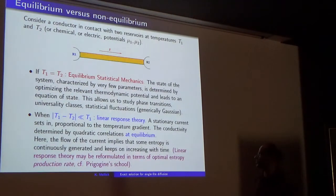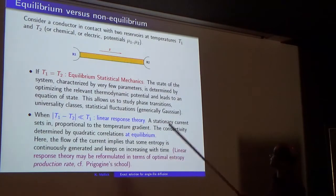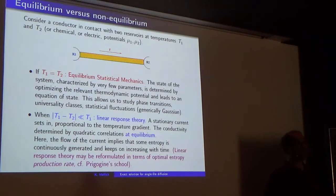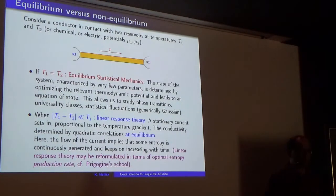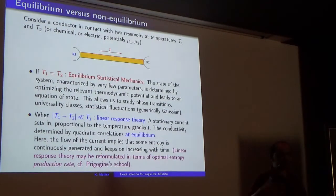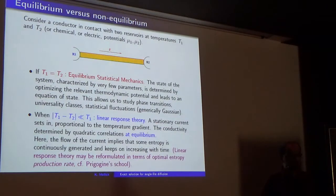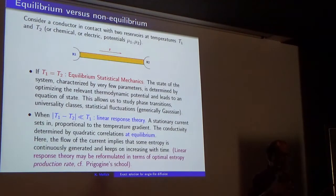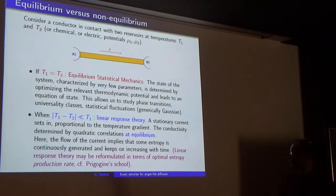In the extreme case, let's state the temperature metaphor — it could be densities. When the two reservoirs are identical with the same temperature, we have equilibrium statistical mechanics. We know everything about it. We have all these Gibbs ensembles. We know how to study thermodynamics, potentials, calculate them using Maxwell-Boltzmann, also get the fluctuations which are dynamically Gaussian, phase diagram, phase transitions, whatever. It's a whole field.